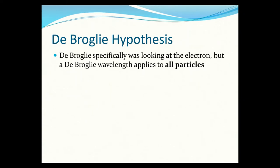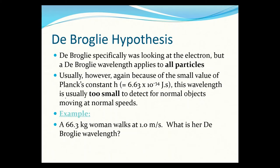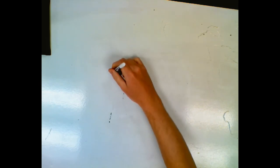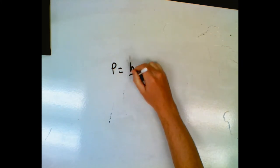The de Broglie wavelength applies to all particles. However, because of the very small value of Planck's constant, the wavelength is too small to detect for normal objects moving at normal speeds. For example: what is the de Broglie wavelength of a 66.3 kg woman walking at 1 m/s?